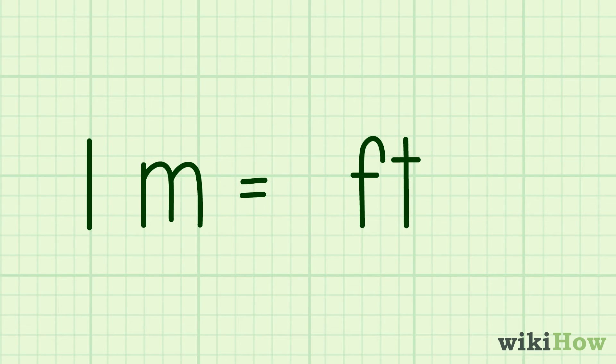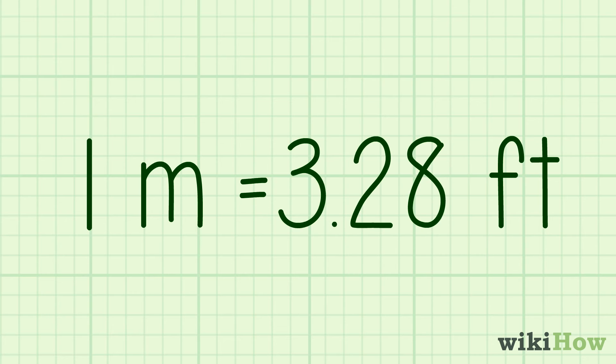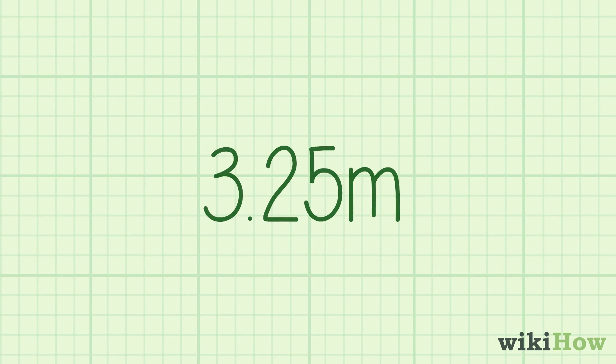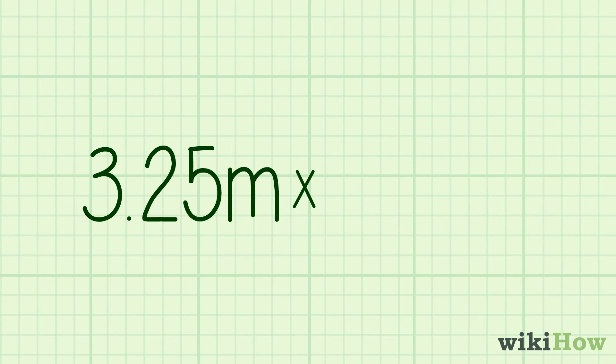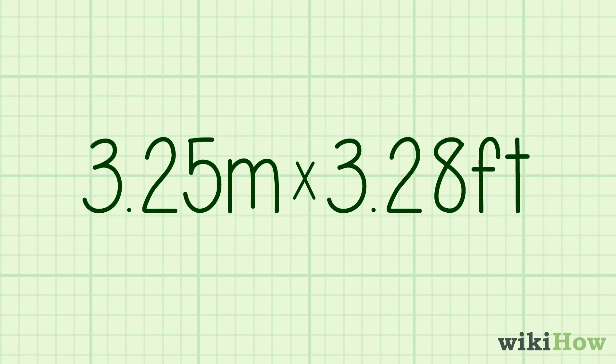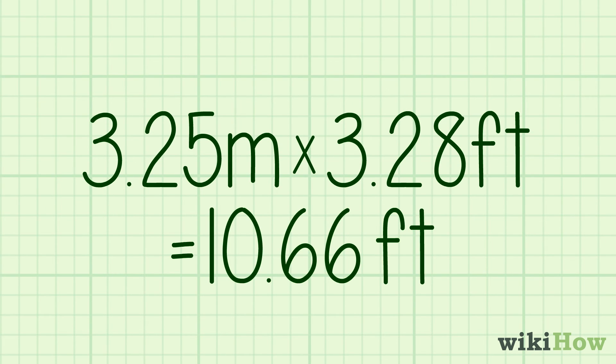know that one meter equals roughly 3.28 feet. If a measurement is 3.25 meters, you'd multiply 3.25 by 3.28 to get 10.66 feet.